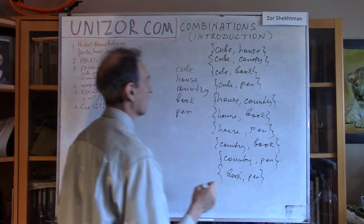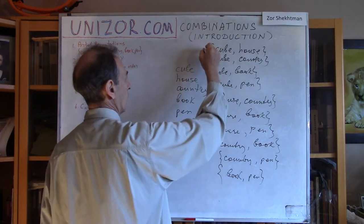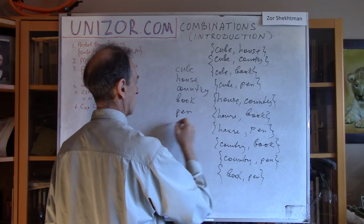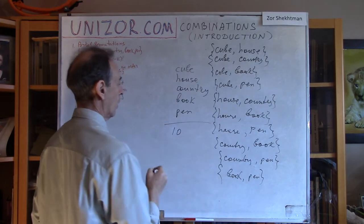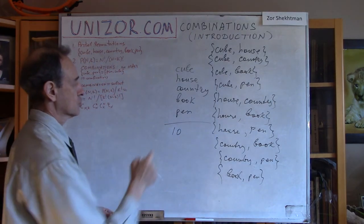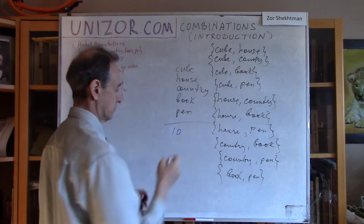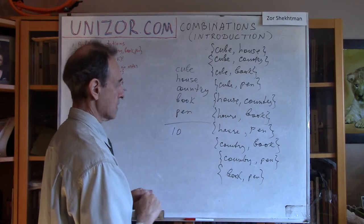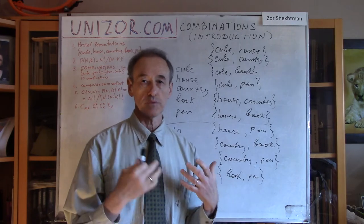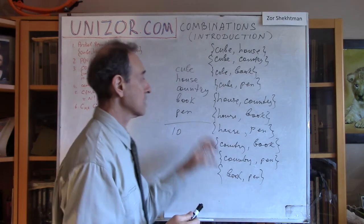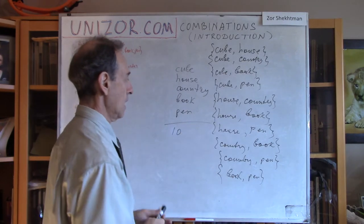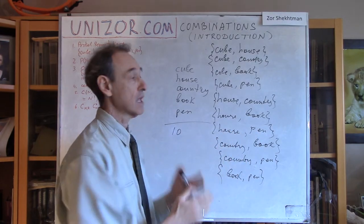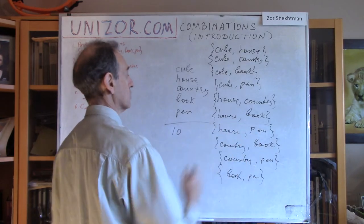We have one, two, three, four, five, six, seven, eight, nine, ten — ten combinations of two objects out of five. This is an example of what I mean by combination. Combination is basically a subset, and the house-pen subset is no different than pen-house — that's why we counted it only once.